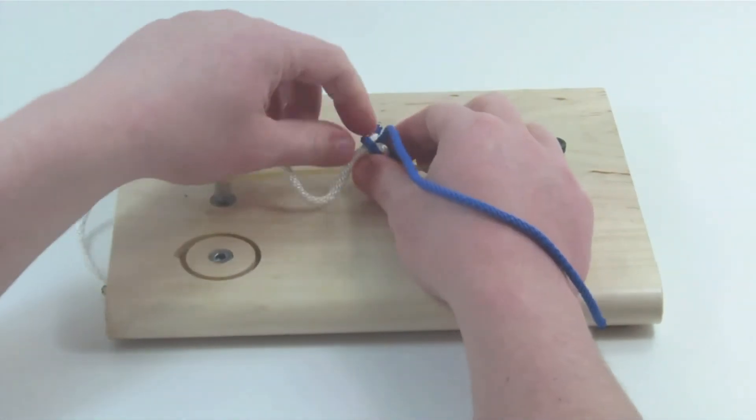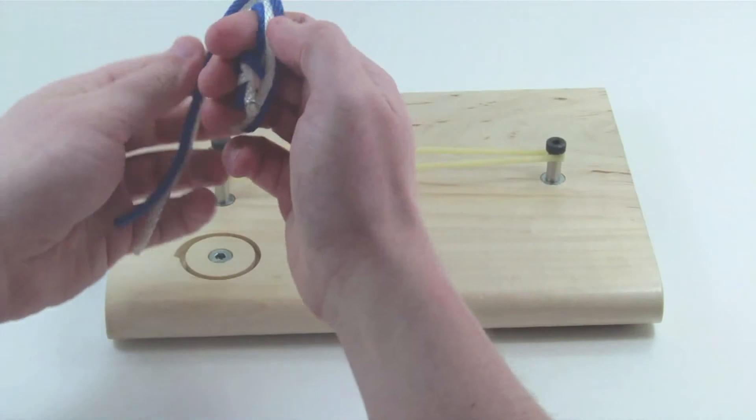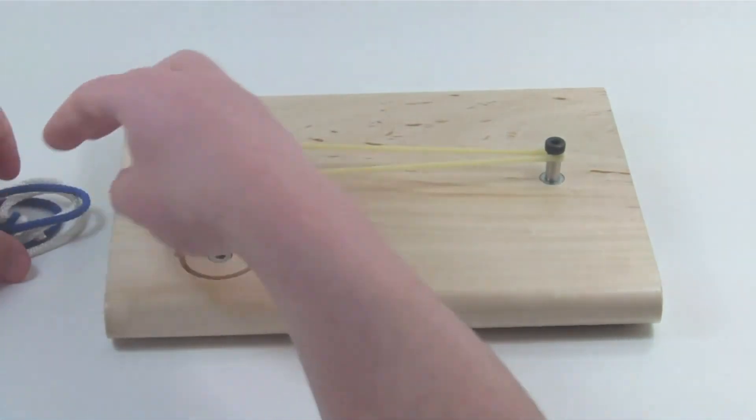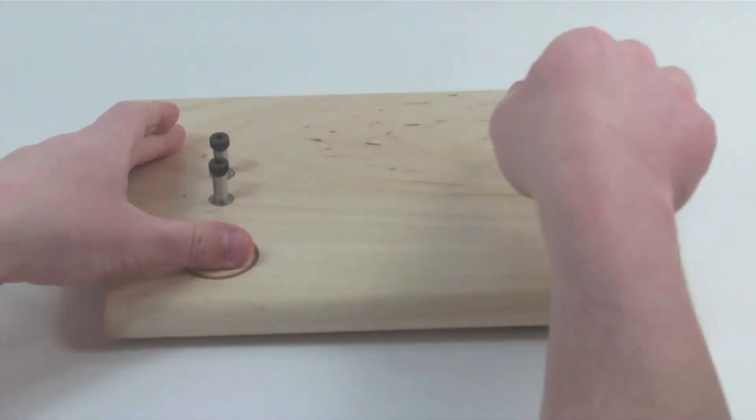When you are done practicing hand ties, the components can be easily disassembled and placed back inside of the kit.